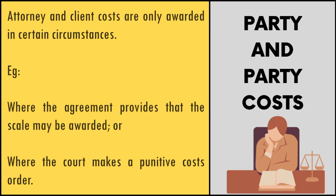The reason why this scale is most common is because a court will only award attorney and client or attorney and own client costs under certain circumstances. Attorney and client costs are generally only awarded where an agreement expressly provides that costs will be payable on the attorney and client scale should a dispute arise. For example, say A and B conclude a contract with a clause providing for the recovery of legal costs on the attorney and client scale in the event of either party having to enforce the contract due to the other party's breach.